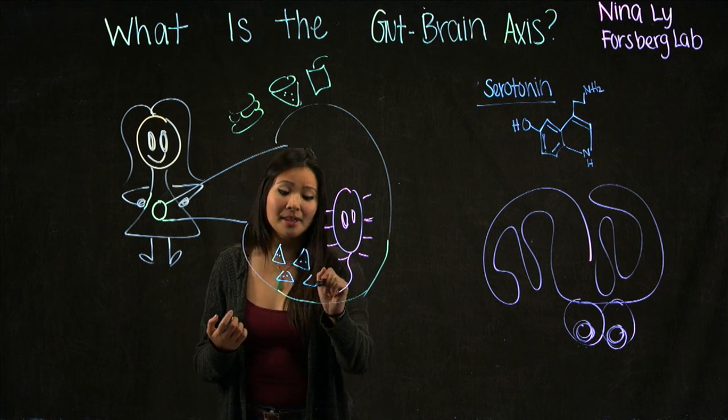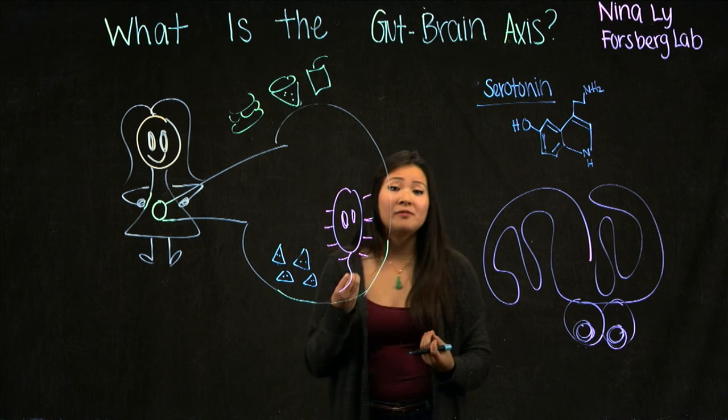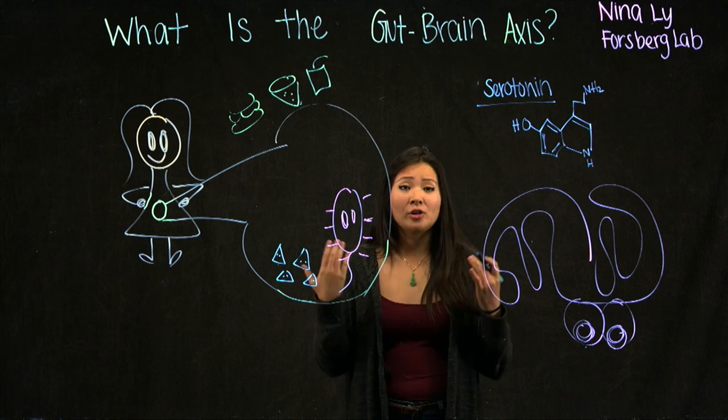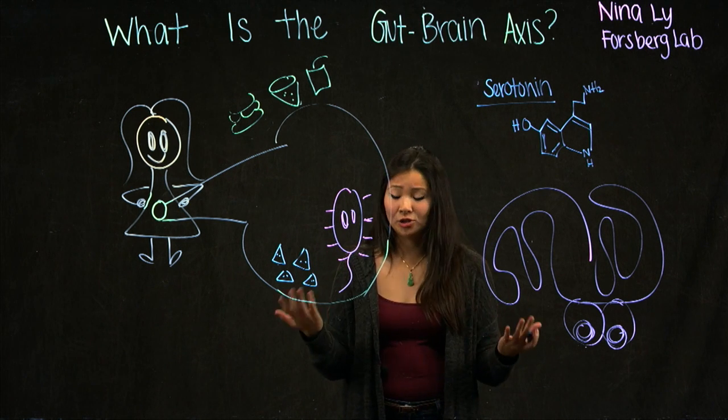And these metabolites are basically different molecules. Like they could be our vitamins, like vitamin K, our sugars like fructose and glucose, our neurotransmitters like serotonin and dopamine.